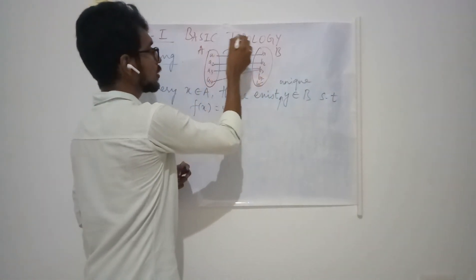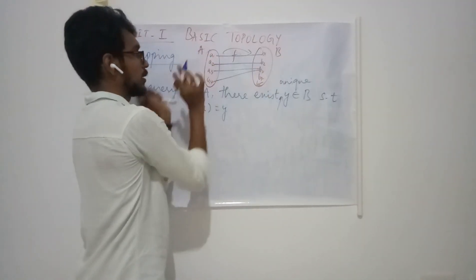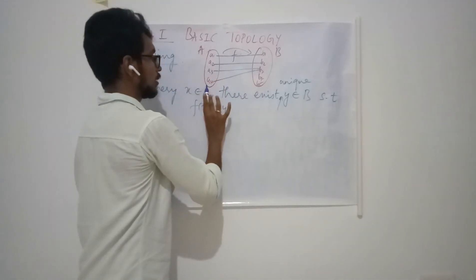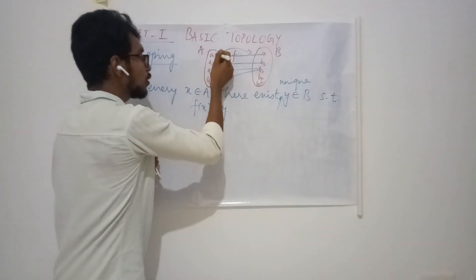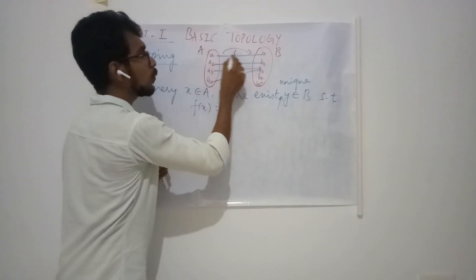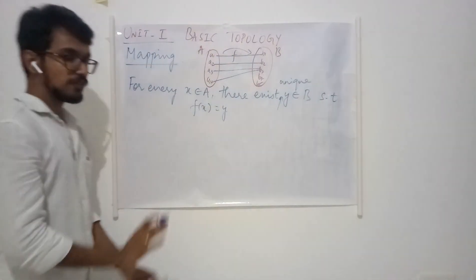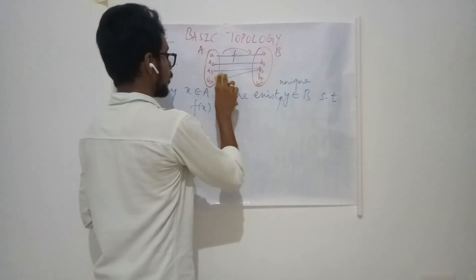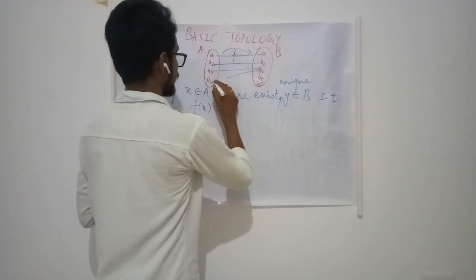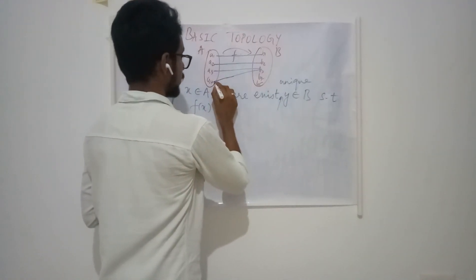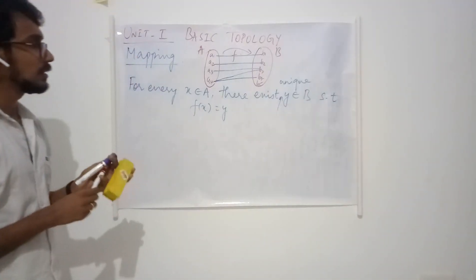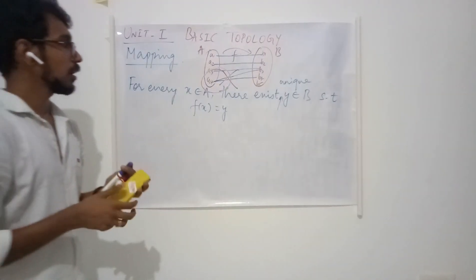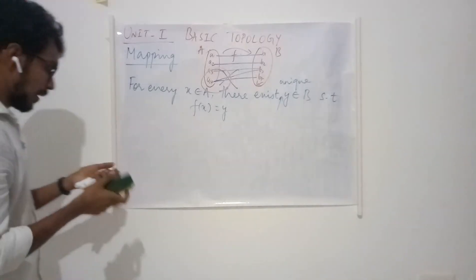From each element, only one arrow has to go. If this is so, this is a valid mapping. Suppose a4 is associated with b3 as well as a4 is going to b4 as well — in this case, this is not a mapping. Hope you can recall the definition of a mapping.